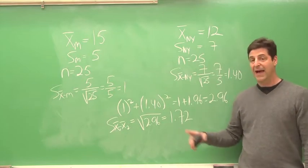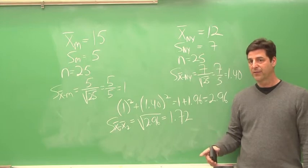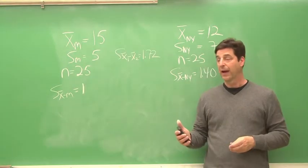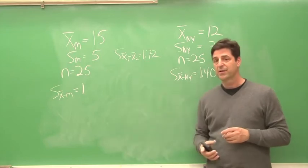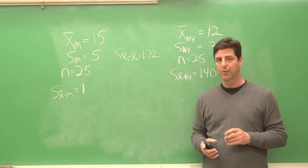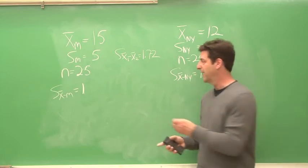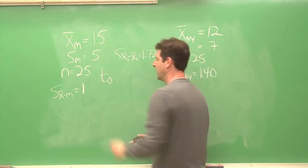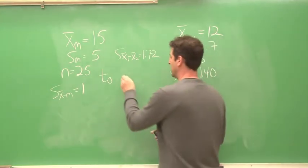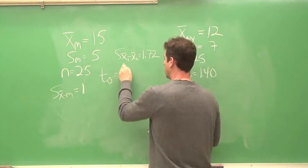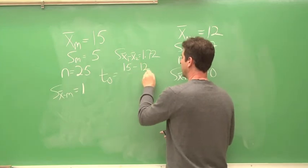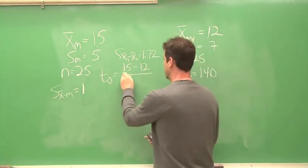Now we can plug that into our T formula and get an observed T value. So that was the standard error of the difference between the sample means that we calculated, 1.72. The observed T value is going to be one sample mean minus the other sample mean. 15 minus 12 divided by that standard error of the difference between the means.